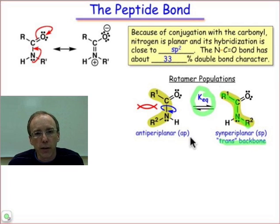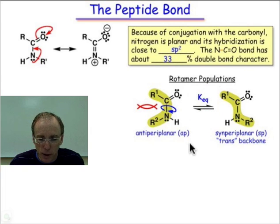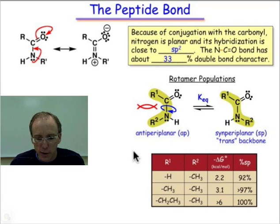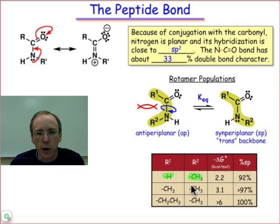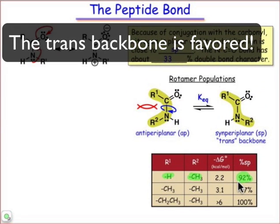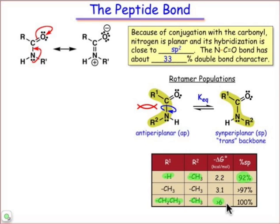The equilibrium constant that governs that rotomer population is very much dependent on the steric interaction between those adjacent alpha-carbon atoms. As long as the R groups are of significant size — certainly an alpha-carbon would be bigger than either an H or a methyl — we're going to have a significant amount of the syn-periplanar or trans backbone conformation. With an ethyl and a methyl group there's basically a 6 kilocalorie per mole difference favoring the syn-periplanar geometry, which for all practical purposes makes that 100%, with a very tiny amount of the anti-periplanar conformation available.